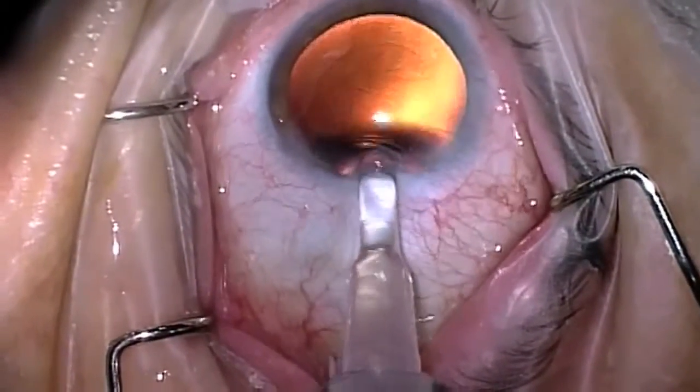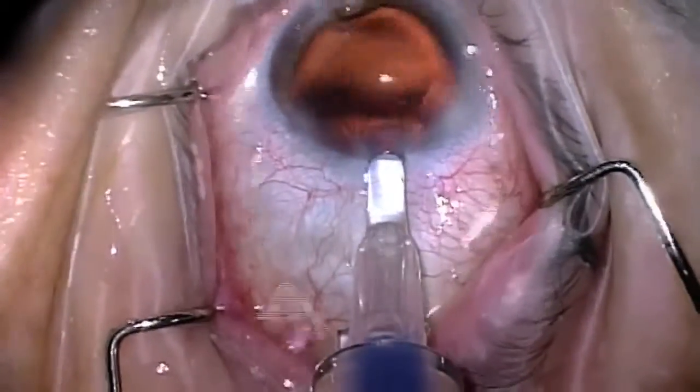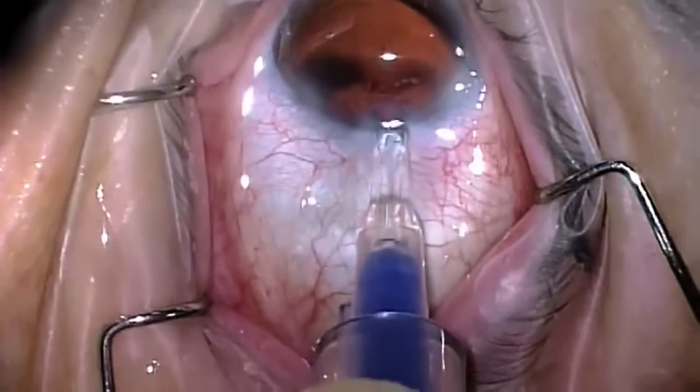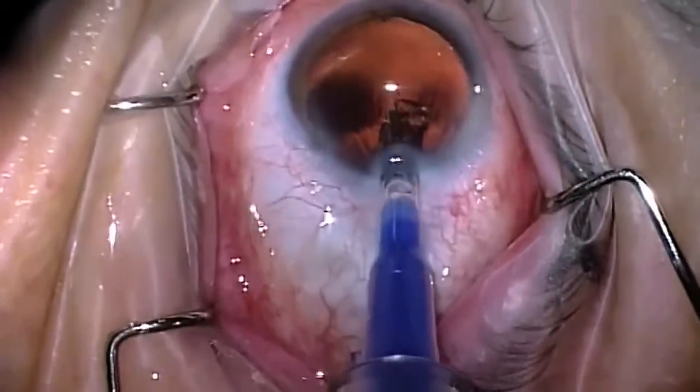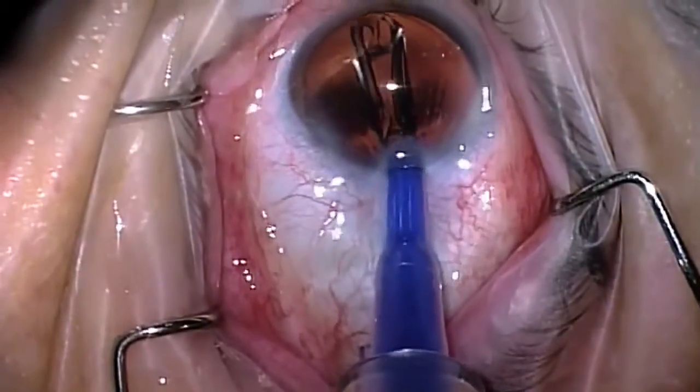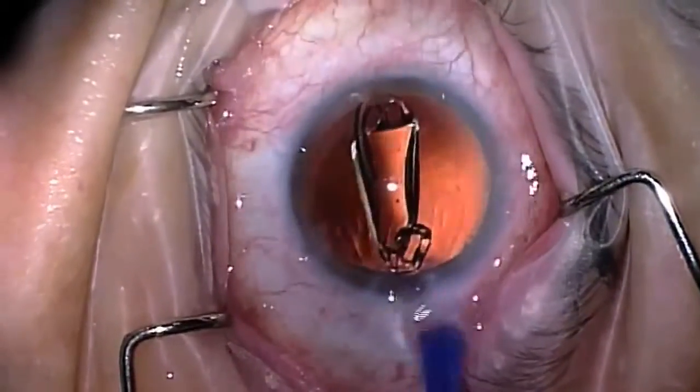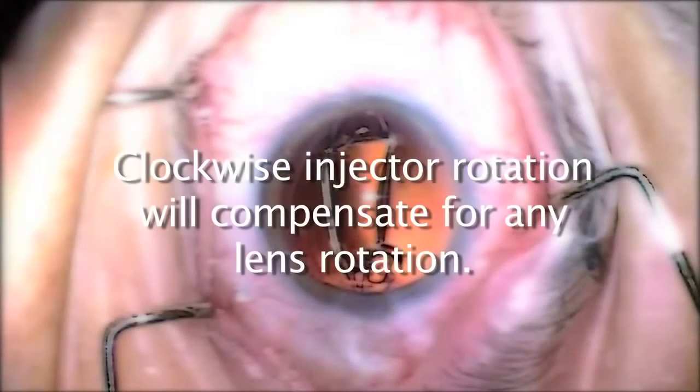With the conical tip bevel facing down, inject the lens by applying continuous pressure on the plunger until the lens is fully expressed from the tip. Clockwise injector rotation will compensate for any lens rotation.